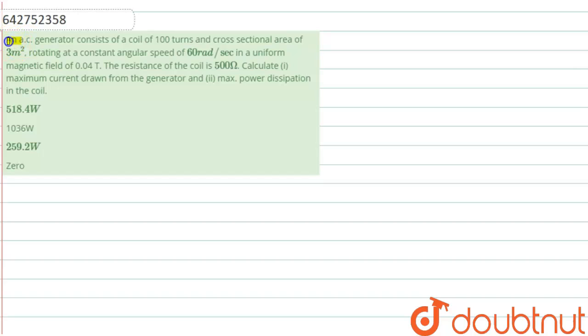The question is: an AC generator consists of a coil of 100 turns and cross-sectional area of 3 meter square, rotating at constant angular speed of 60 radian per second in a uniform magnetic field of 0.04 tesla. The resistance of the coil is 500 ohm. We have to calculate first, the maximum current drawn from the generator, and second, the maximum power dissipation in the coil.